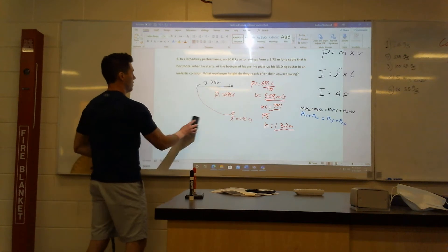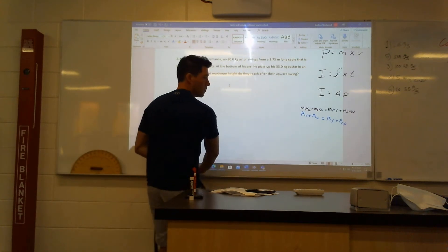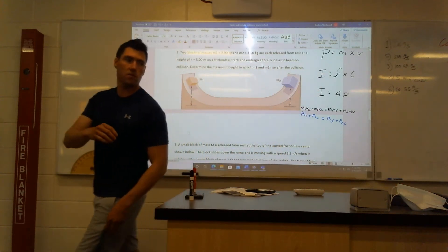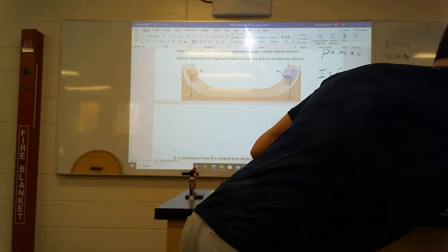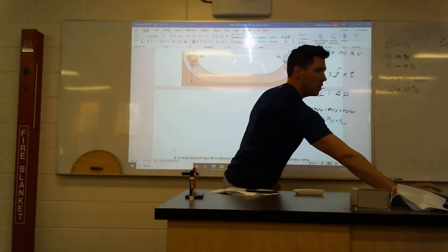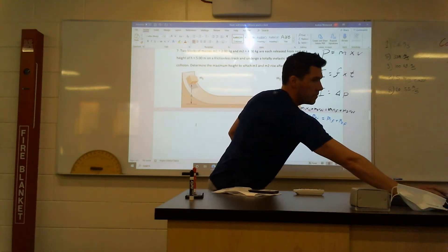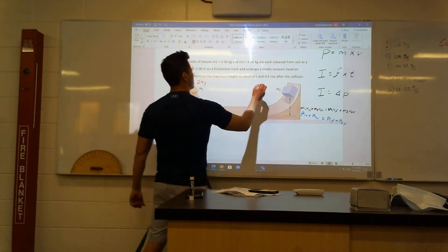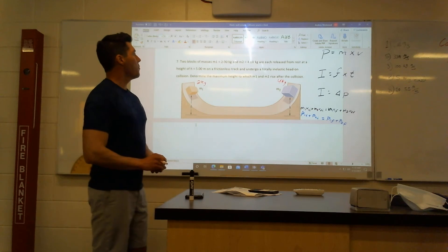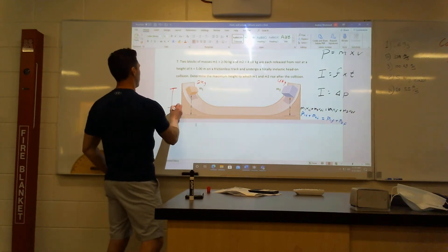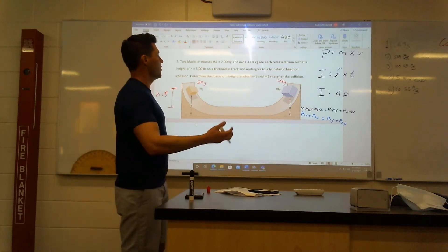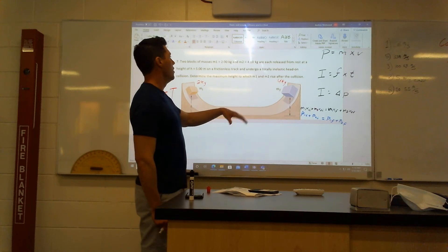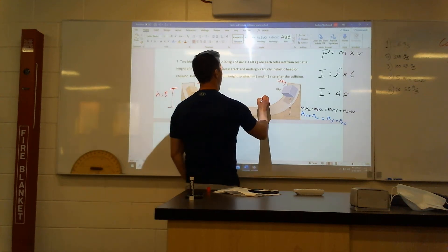Let's go to question 7. Two blocks: one has a mass of 2 kilograms, the other 4 kilograms. They're released from rest at a height of 5 meters on a frictionless track and undergo a totally inelastic collision — which means they stick together. We need to determine the maximum height they reach. We need to know the momentum at the bottom, and for that we need the velocity at the bottom.